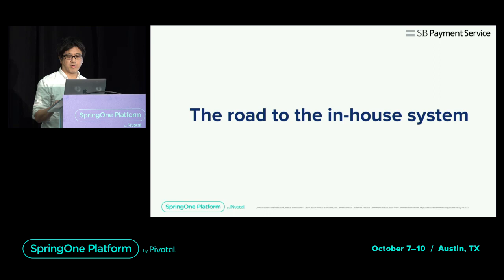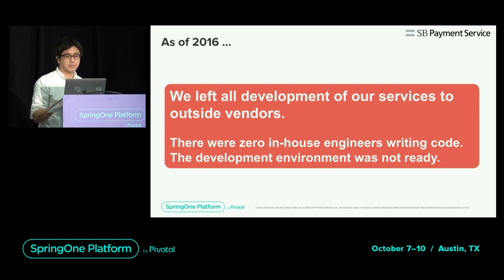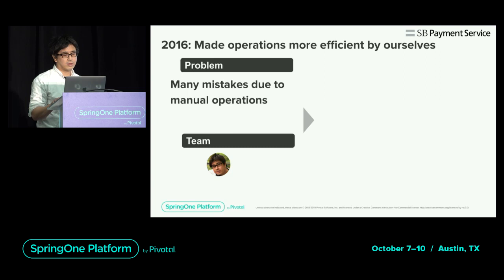In 2016, when I joined the company, we relied on external vendors for all development — zero internal engineers writing code and no development environment setup. Looking at the reality of operations, there were many manual tasks and many errors due to manual operation.